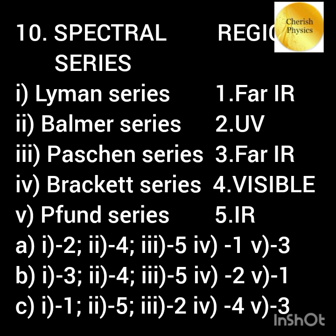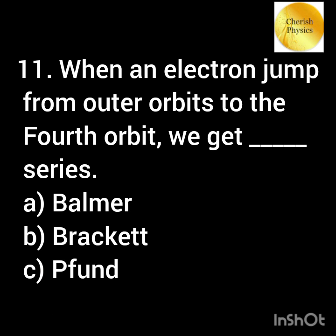Match the spectral series with their corresponding electromagnetic region. When an electron jumps from outer orbits to the fourth orbit, we get what type of spectral series?